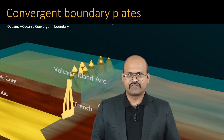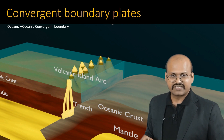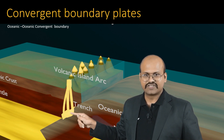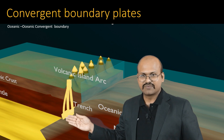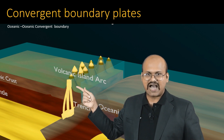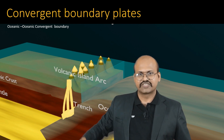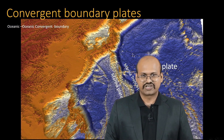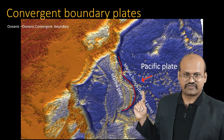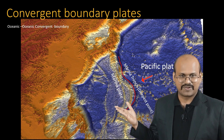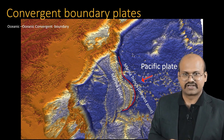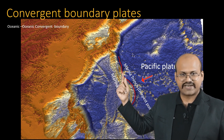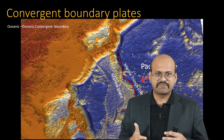At the oceanic-oceanic convergent boundary, two oceanic plates meet and the heavier one subducts. Due to friction, magma forms and reaches the surface, forming volcanic island arcs. An example is the Mariana Trench, where the Pacific plate subducts under the Mariana plate, forming the Mariana Trench — which contains the deepest point on earth.